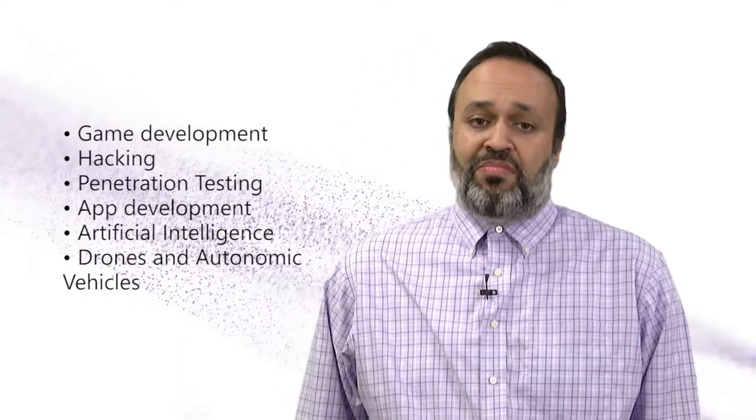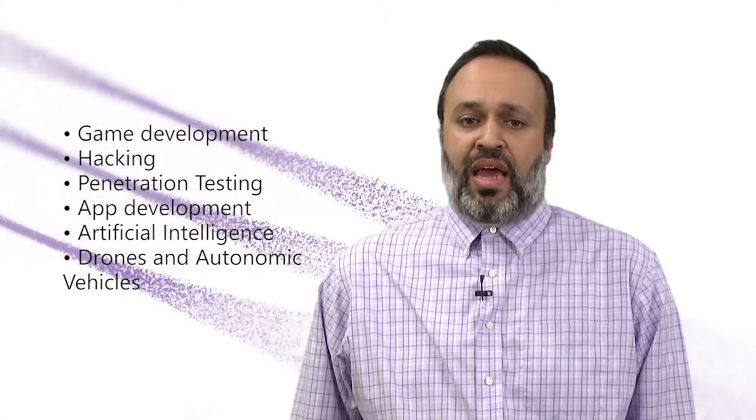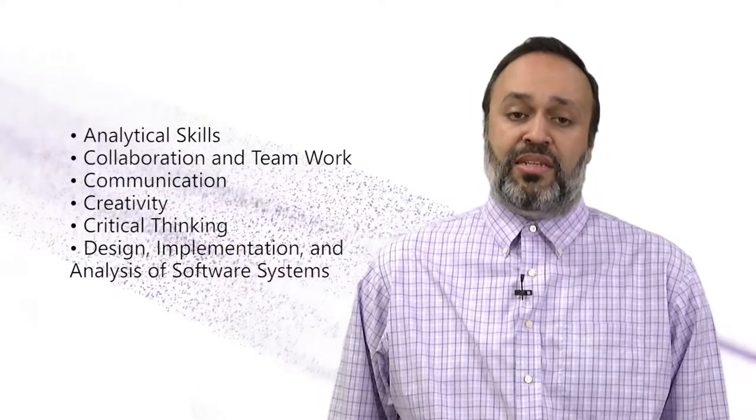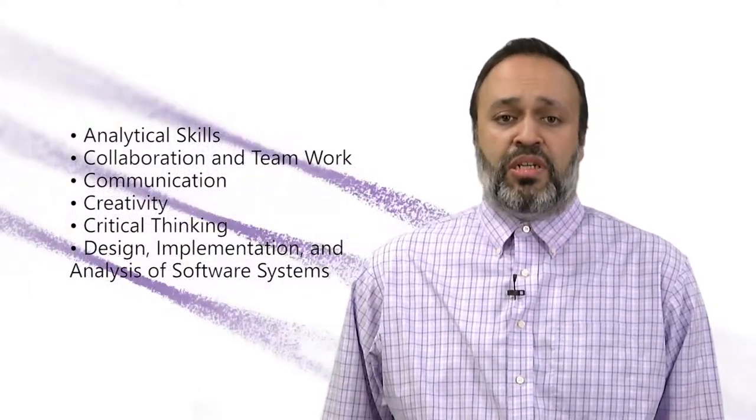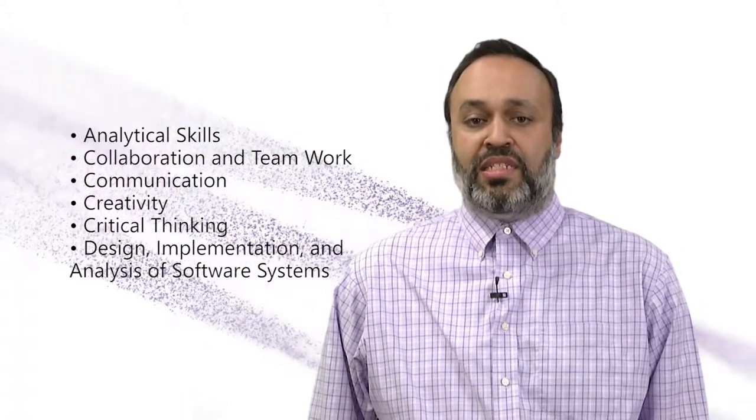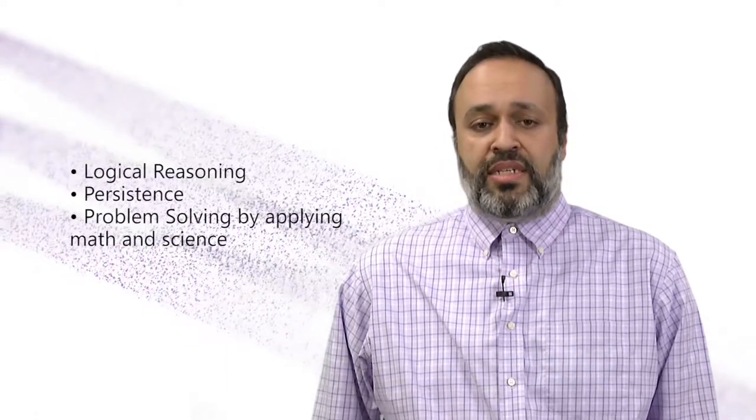The state requires every student to take nine credit hours over the summer prior to finishing the degree. So plan to have some courses during the summer sessions. My advice to you is to plan to have most of these credit hours over the first summer. As a computer scientist, you will have a chance to do multiple interesting things such as game development, hacking, penetration testing, app development, artificial intelligence, drones, and autonomic vehicles. This major helps the student develop multiple skills such as analytic skills, collaboration and teamwork, communication, creativity, critical thinking, design implementation and analysis of software systems, logical reasoning, persistence, problem solving by applying math and science.